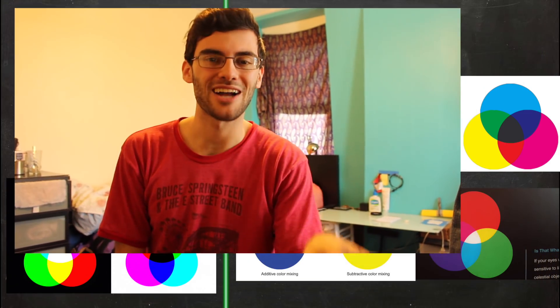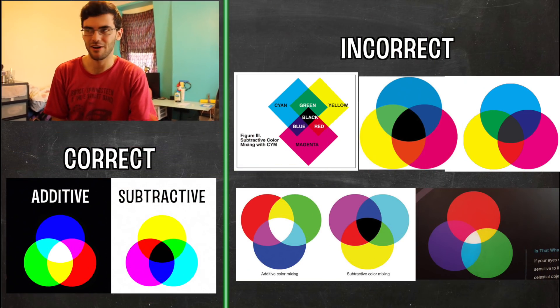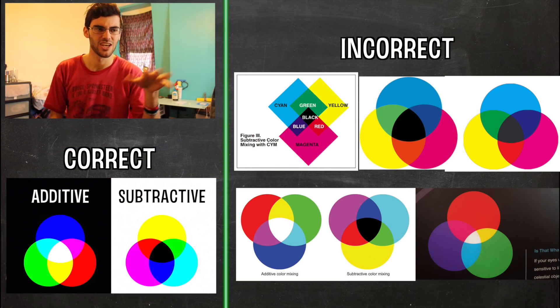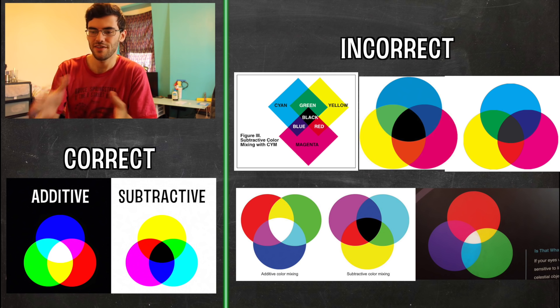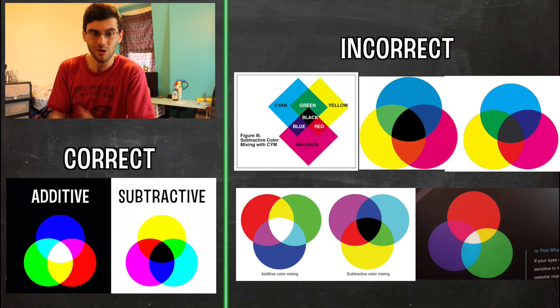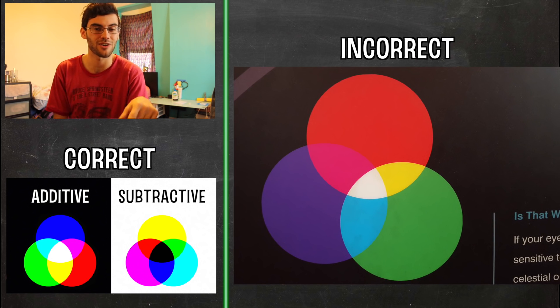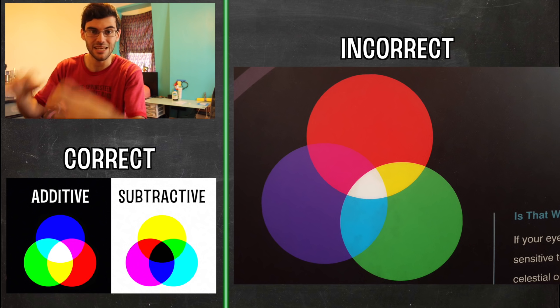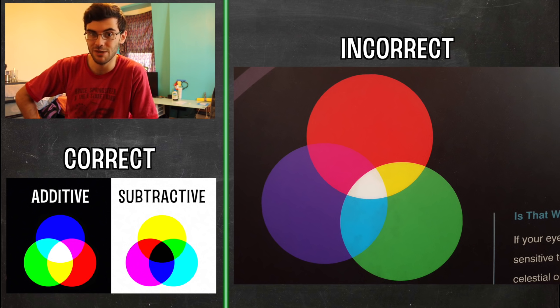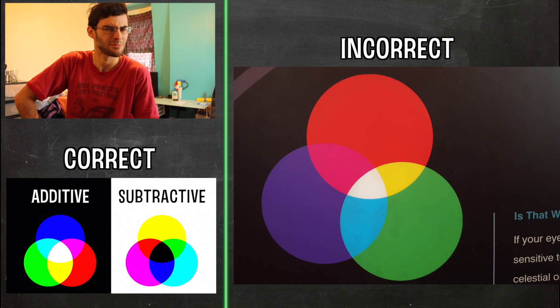One last thing: since this video has already been super long, I was shocked and upset by the amount of incorrect depictions of subtractive and additive color mixing I found online. Most of them use slightly off-colored versions of the colors, or are just totally wrong. The last one I found actually isn't from online — it's on an exhibit in the National Air and Space Museum in Washington DC. So that's upsetting. Anyway, now I'm done for real.